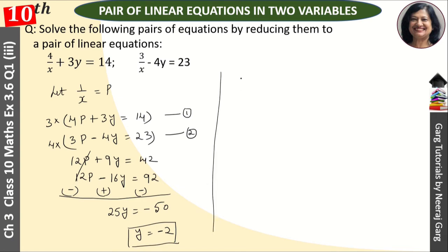Now we put this y value into equation 1. So 4p + 3(-2) = 14. Then 4p = 14 + 6, which gives us 4p = 20.